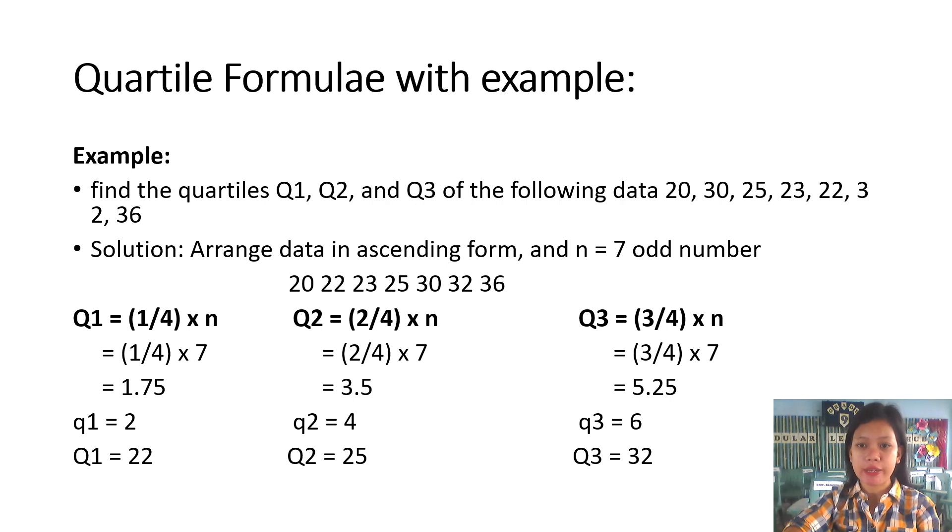20, 30, 25, 23, 22, 32, and 36. First step is we have to arrange the data in ascending form. We have here from ascending form or from smallest to greatest number: 20, 22, 23, 25, 30, 32, and 36. A total of seven odd numbers, a total of seven data.